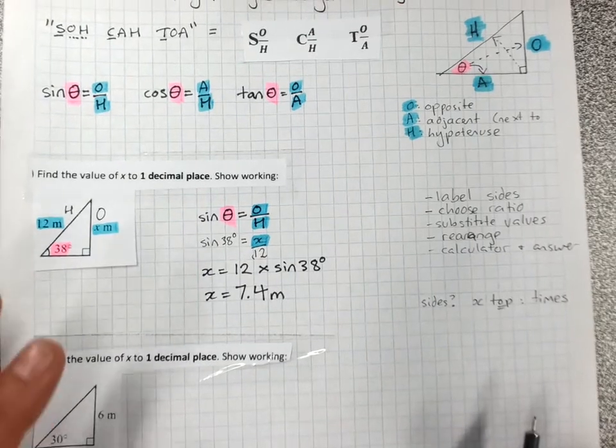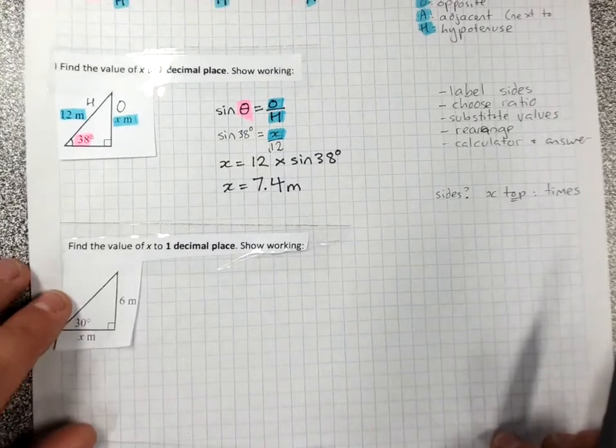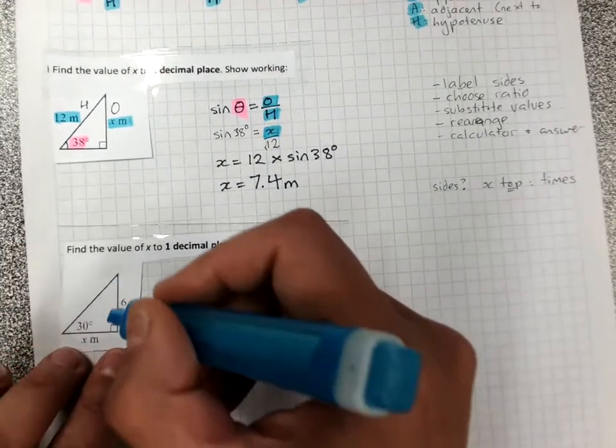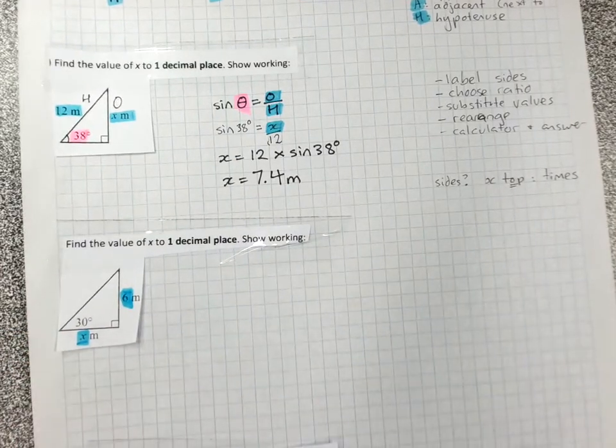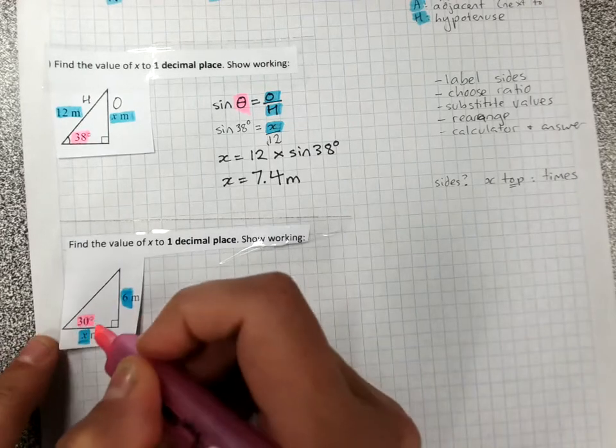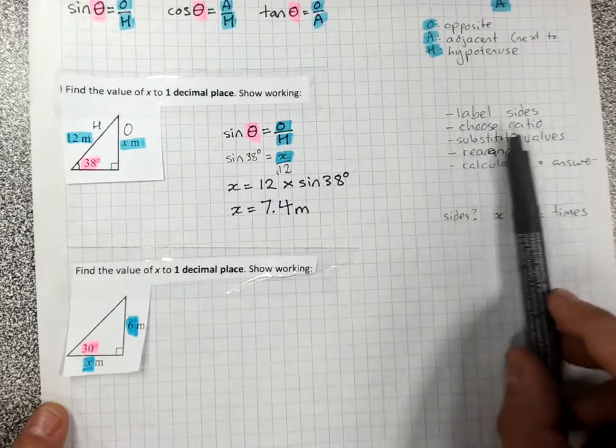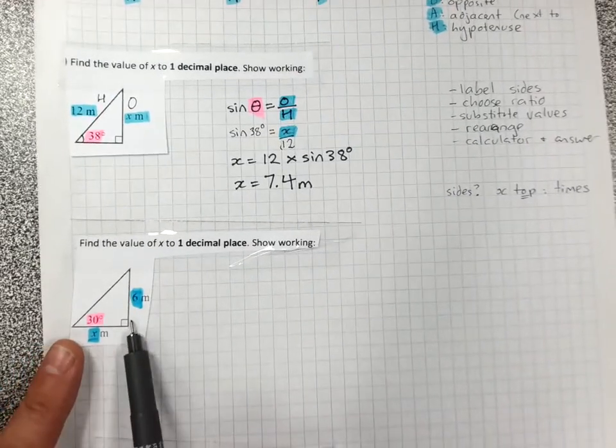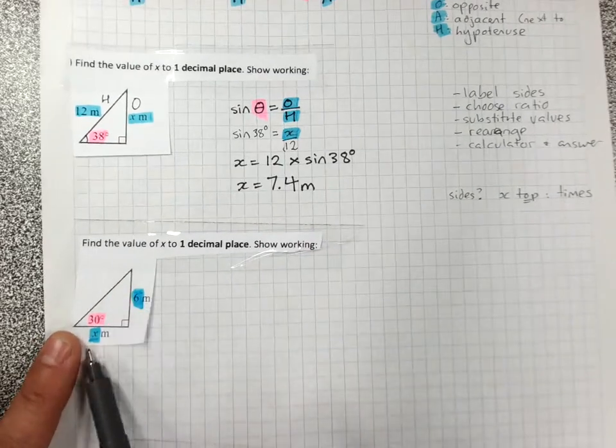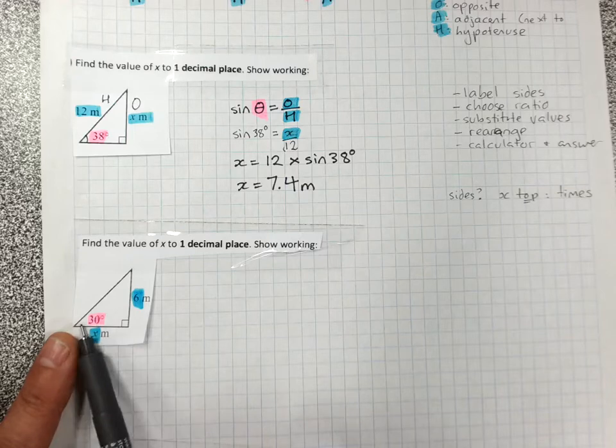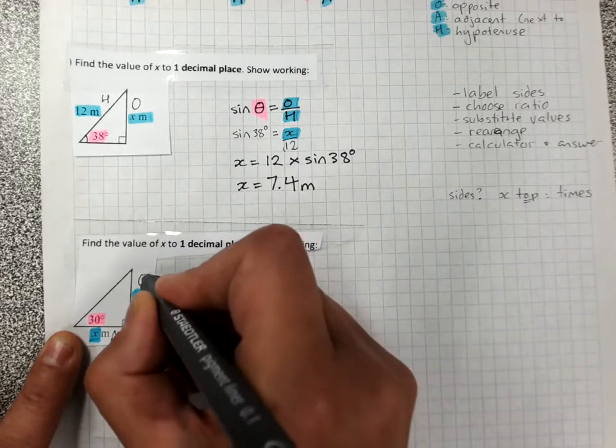Now, let's tackle the next type of question with these same strategies. Highlight anything on a side in blue. Highlight the angle that's marked, not the right angle, in pink. Label the sides. Right angle, nothing on the hypotenuse. I'm not going to bother to label it. I'm only interested where there's something blue. Angle, adjacent next to it. Opposite it, opposite.